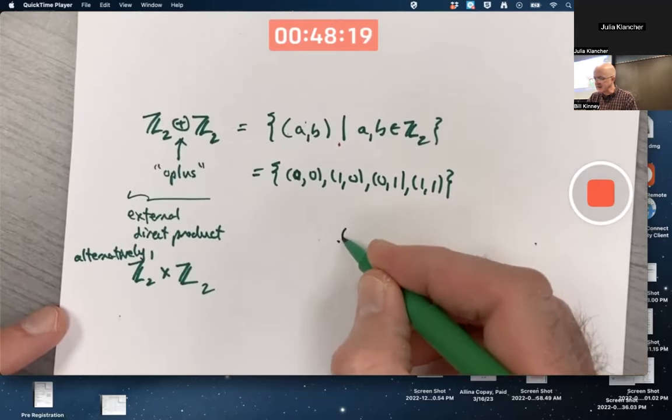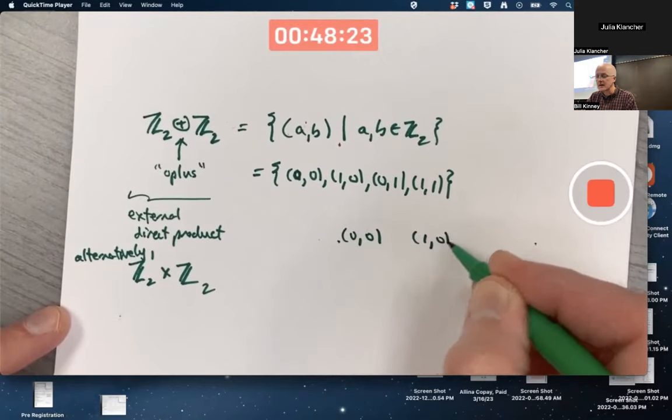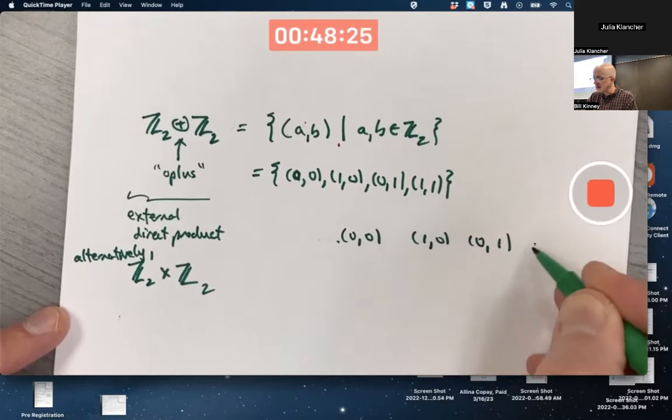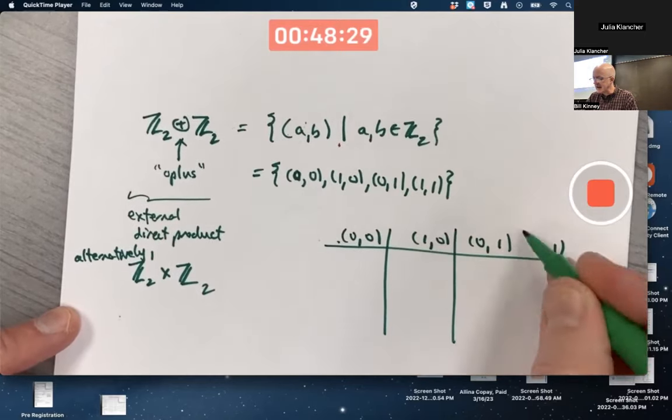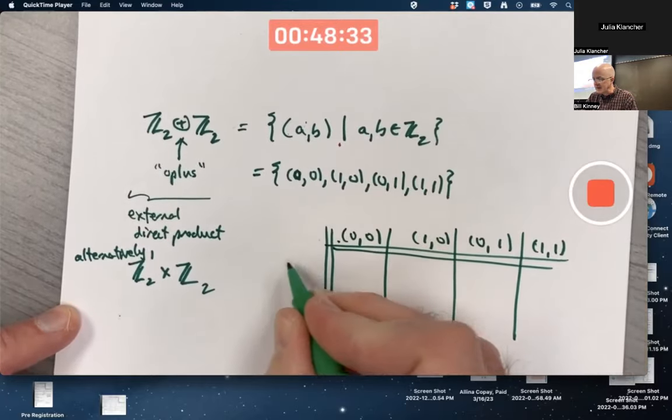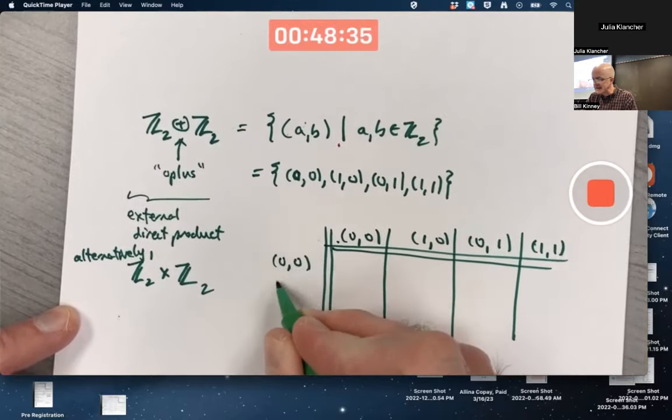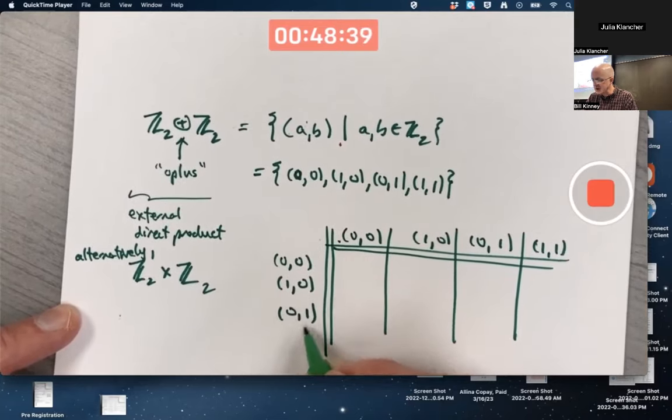What happens with this particular group? What's its Cayley table look like? The operation is, again, component-wise, in this case, component-wise addition mod 2.